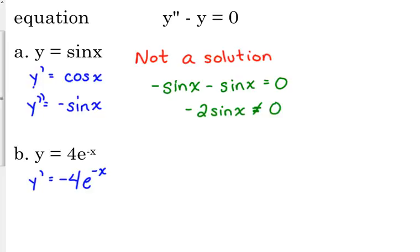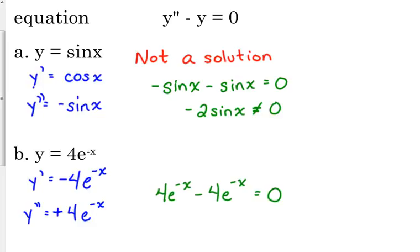The derivative of the exponent is negative 1, so that gives us negative 4e to the negative x as the first derivative. For the second derivative, bring down the negative 4; e to the negative x is its own derivative, times the derivative of the exponent, which turns that negative 4 into a positive 4. So second derivative minus the original gives us 0. This function does satisfy the differential equation.